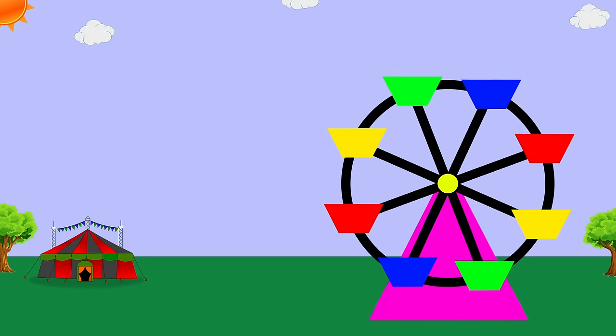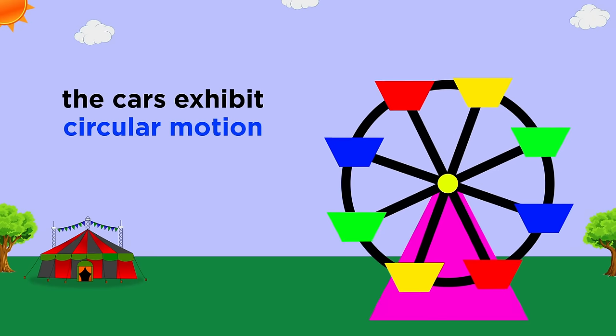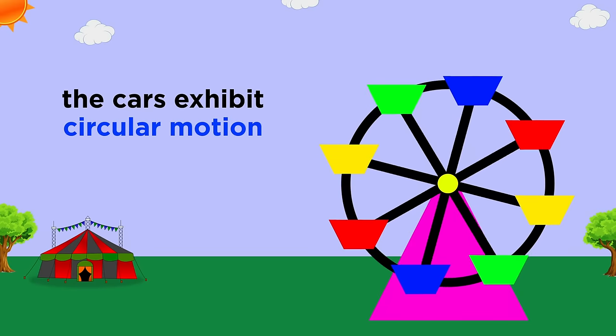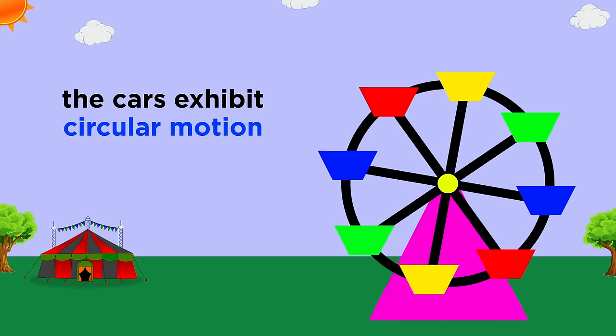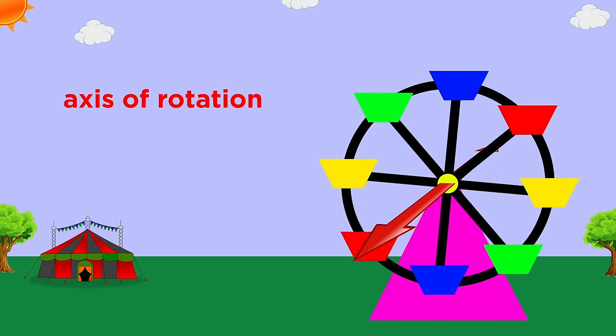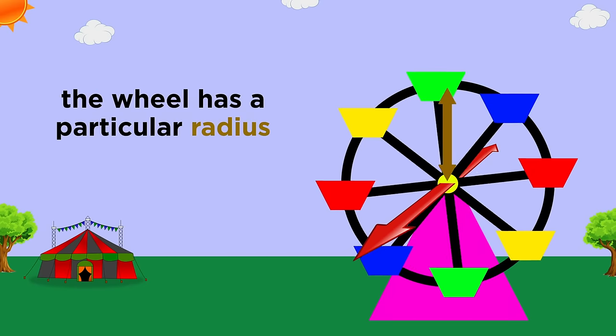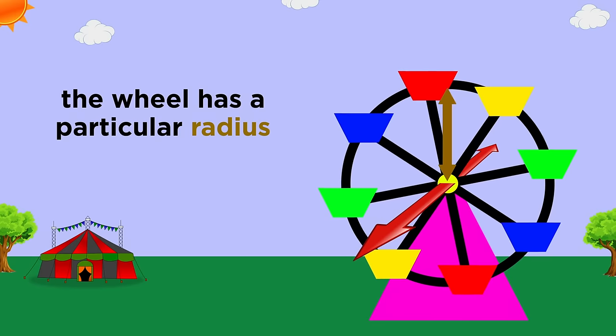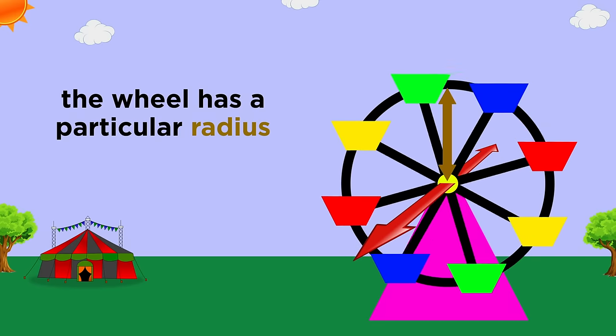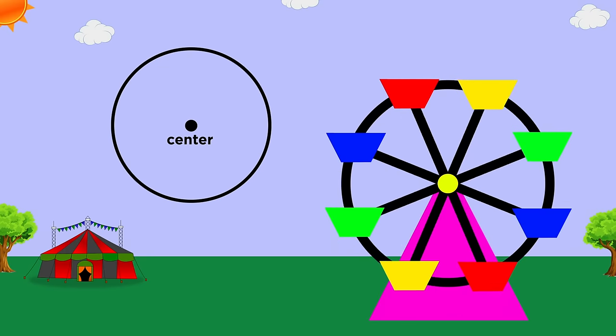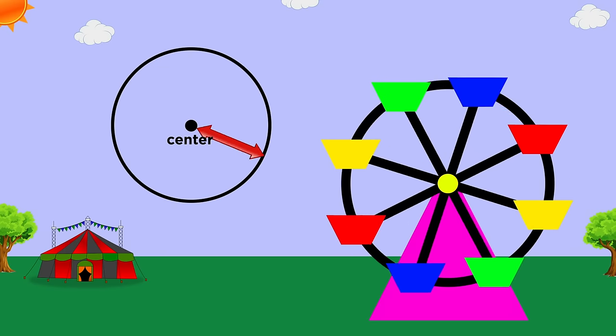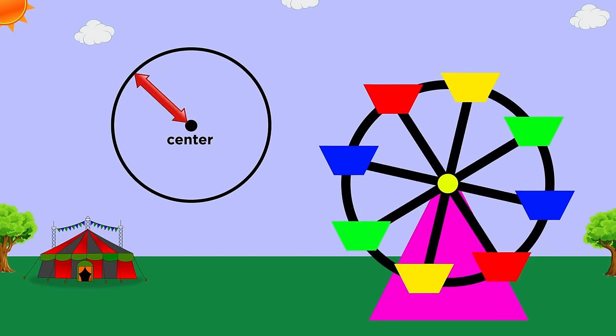Consider a ferris wheel. As the wheel turns, the cars exhibit circular motion because they revolve around a single axis of rotation, which runs through the center of the wheel perpendicular to the plane that contains it. The cars move around this axis with a constant radius, so they trace a circle as they move, since a circle is the set of all points equidistant from some central point.